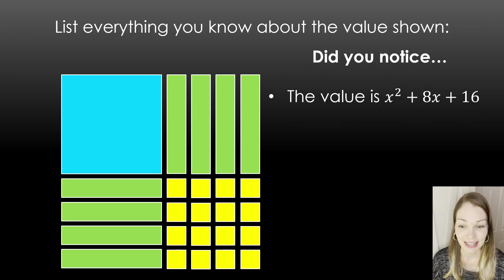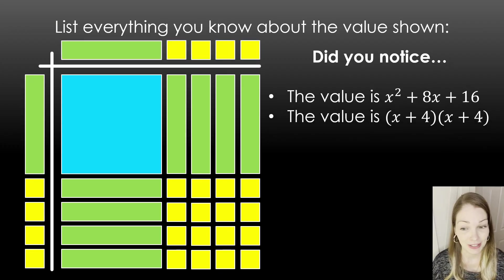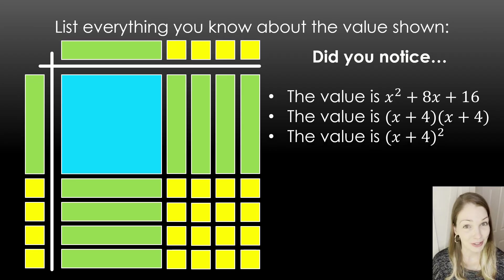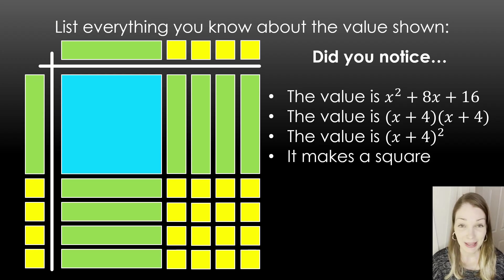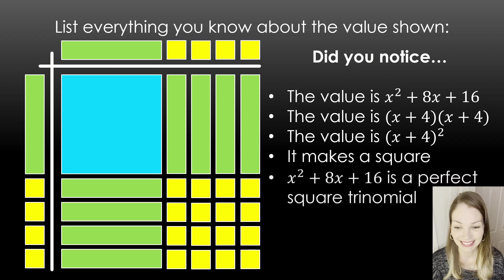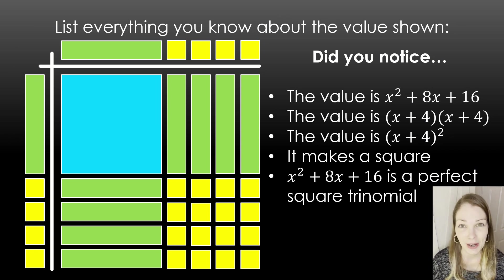All right, let's see if you notice these things. The value, it's x squared plus 8x plus 16. The value is also x plus 4 times x plus 4 in the factored form. The value is also x plus 4 squared. It makes a square.